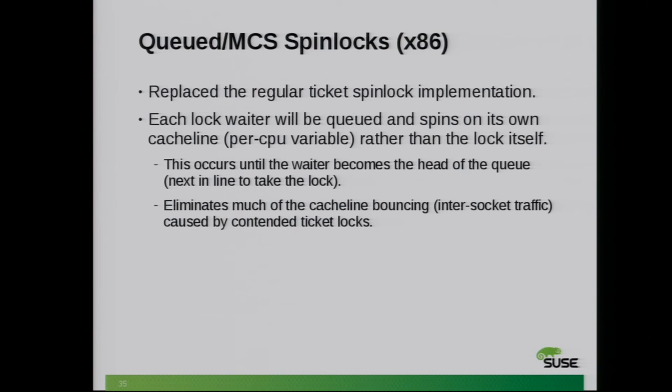This is what Ticket Spin Locks used to do. With a replacement called Queued Spin Locks — currently only for x86 because other architectures need different barrier semantics to fully implement this — instead of spinning or busy waiting on a remote lock, you see that the lock is contended, add yourself to a per-CPU queue, and just poll on that local address instead of the remote lock variable.